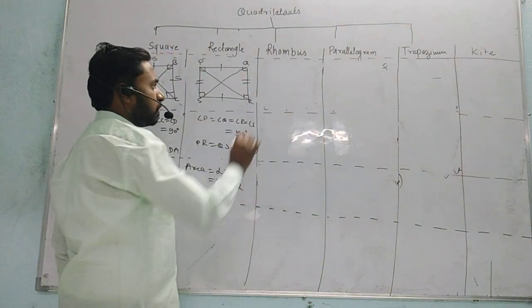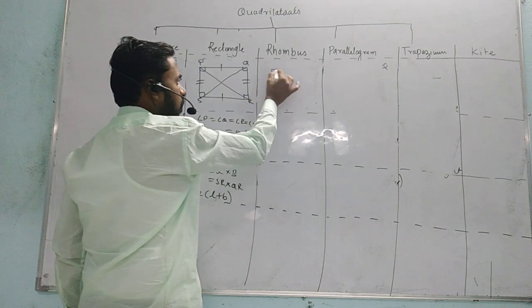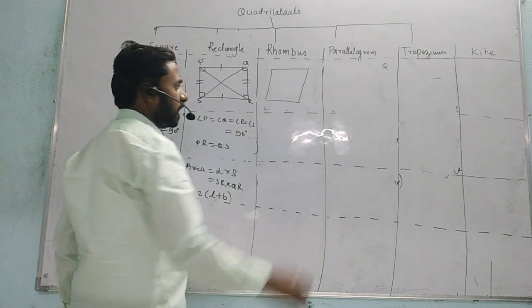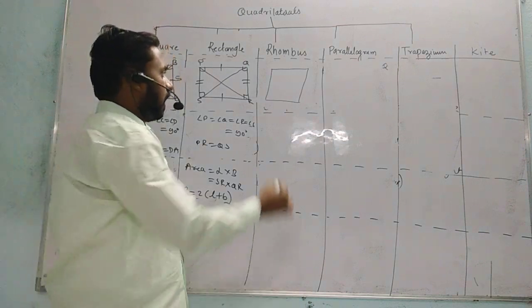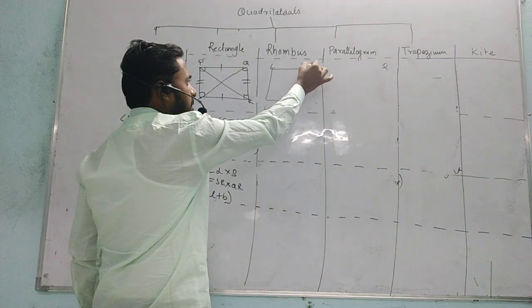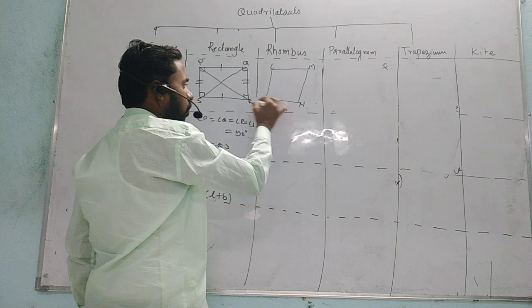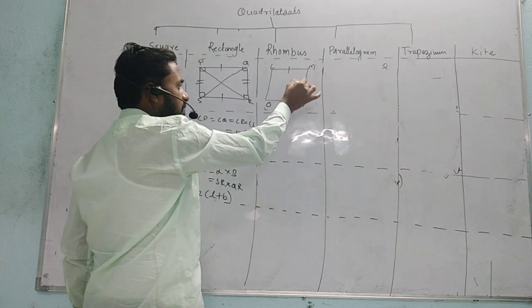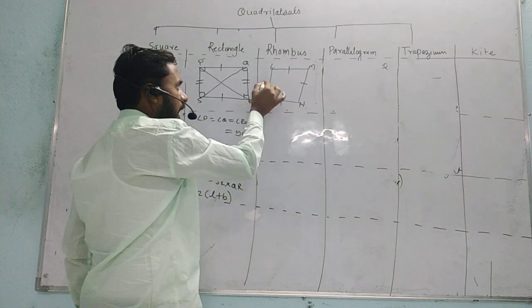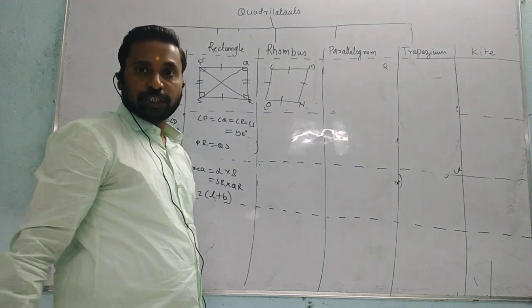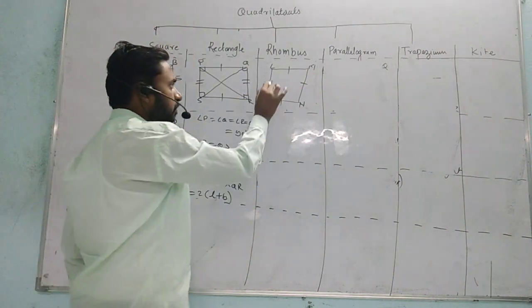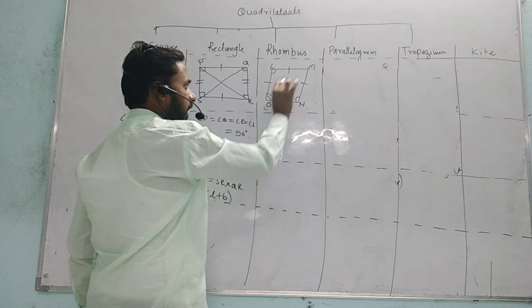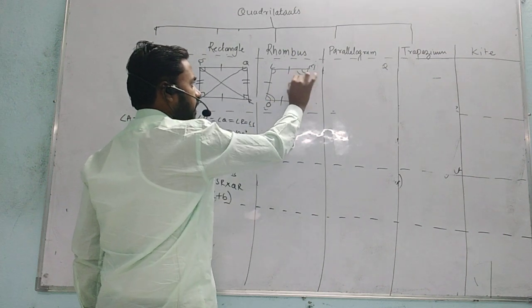Now the next one is rhombus. Rhombus is a polygon where all four sides are of equal measurement. Here in rhombus LMNO, all four sides LM, MN, NO and OL are of equal measurement. Next, opposite angles are equal — meaning this angle is equal to the opposite angle.